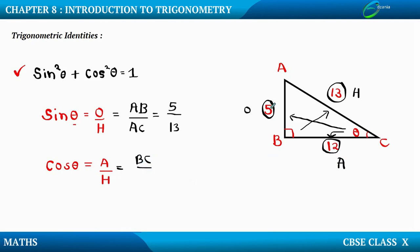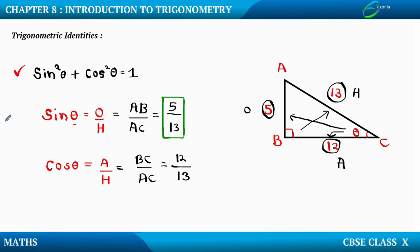We have H as hypotenuse AC, which is fixed. So cos theta equals BC upon AC. BC is 12 and AC is 13 — same denominator as sin theta. So we got two values: sin theta equals 5 upon 13, and cos theta equals 12 upon 13.